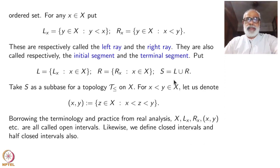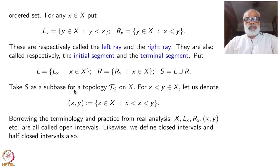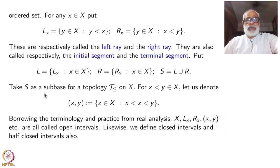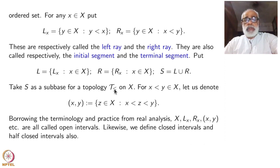Any subset can be taken as a sub-base for a topology. All you have to do is take all finite intersections and then take all possible unions — that is the topology. So take S as a sub-base for a topology, which we will denote by tau, denoting that this topology corresponds to the partial order.